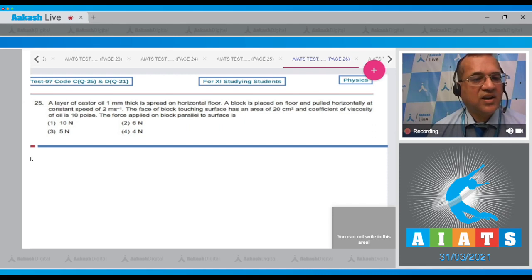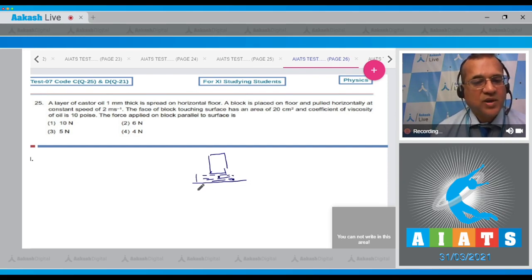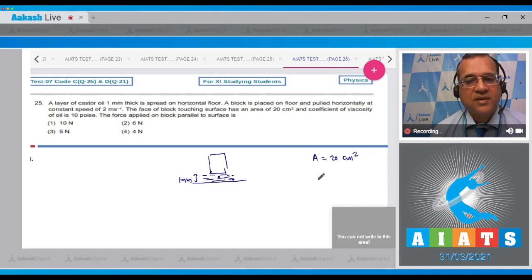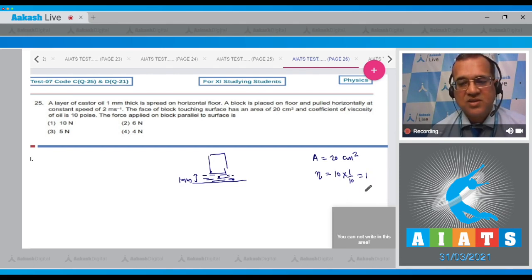Question number 25 is: a layer of castor oil 1 mm thick is spread on horizontal floor. A block is placed on the floor and pulled horizontally at constant speed of 2 meters per second. The face of the block touching the surface has area of 20 cm square and the coefficient of viscosity eta is 10 poise. The force applied on the block parallel to the surface is. Now, dear students, it is given that this is the block which is kept on the surface and there is a layer of thickness of 1 mm that is of castor oil.